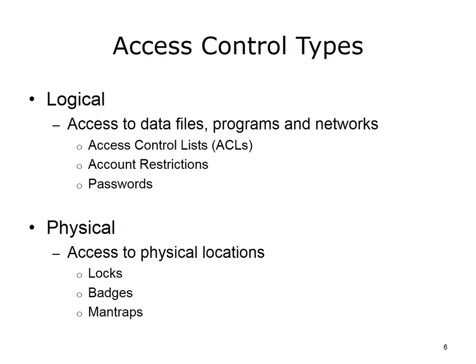There are two types of access control: logical and physical. Logical access control is managing access to data files, programs, and networks. Methods for controlling logical access include access control lists, ACLs, account restrictions, and authentication methods. Physical access control is managing who has access to physical locations. Methods include locks, ID badges, and mantraps. Mantraps will be explained later in the unit.